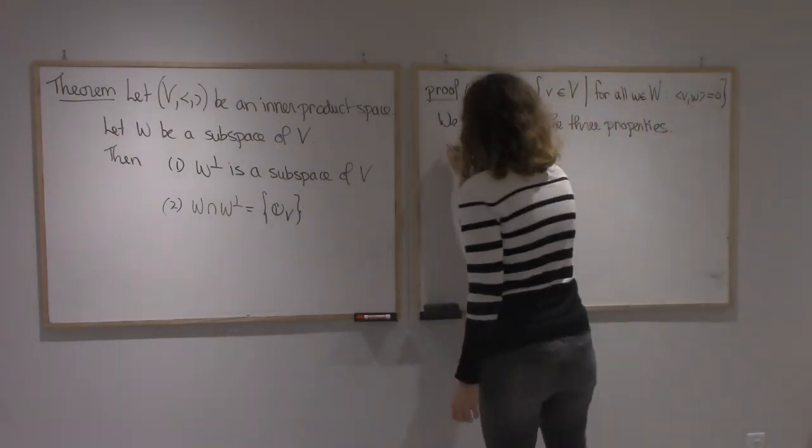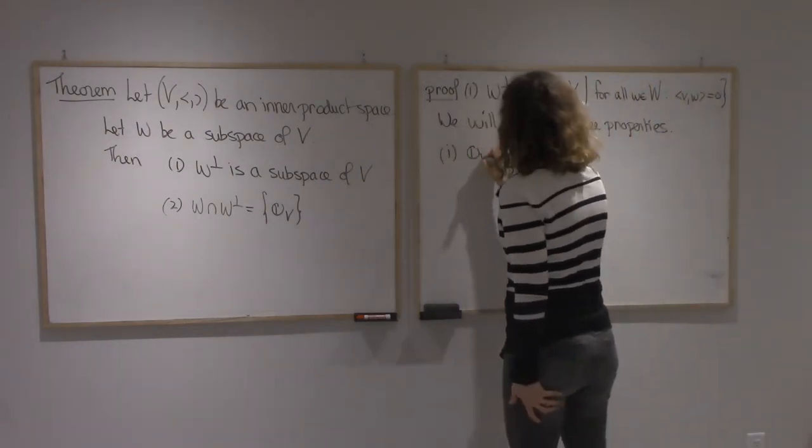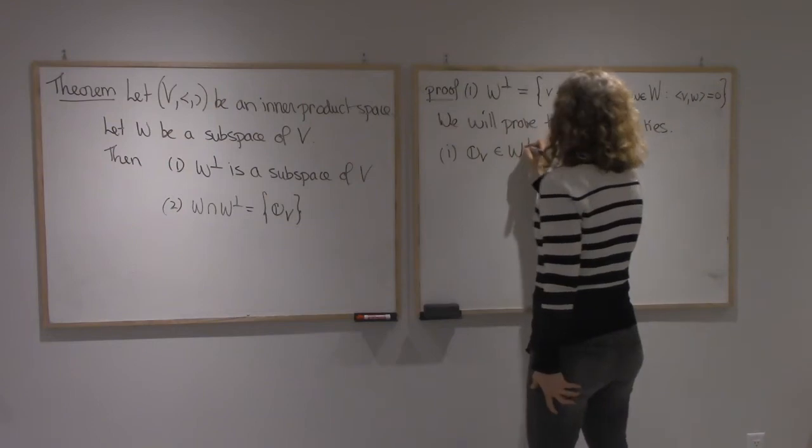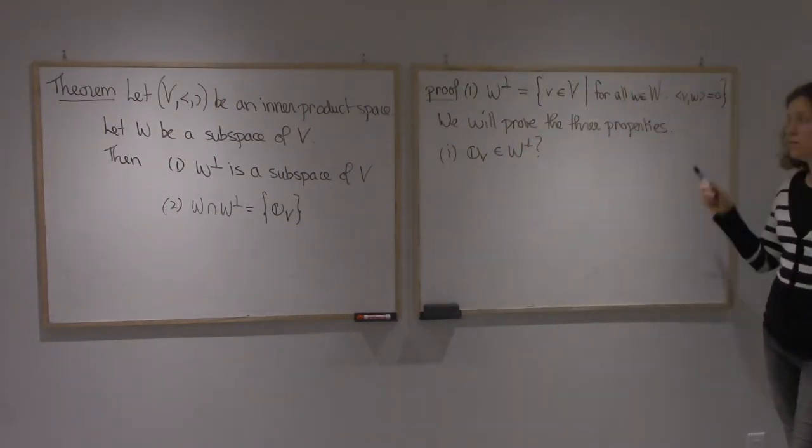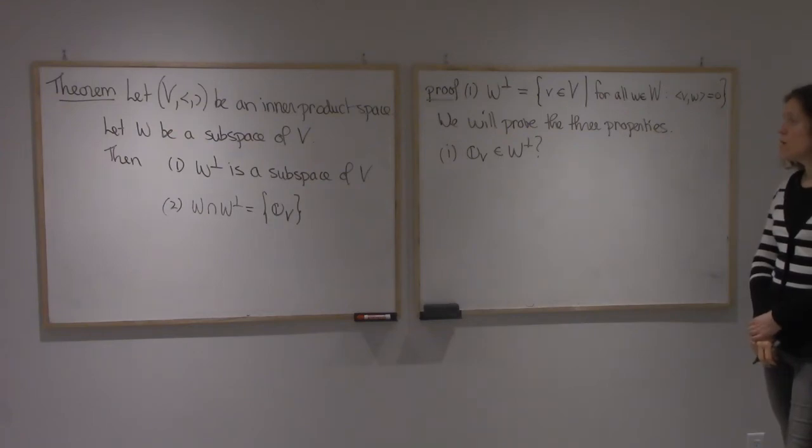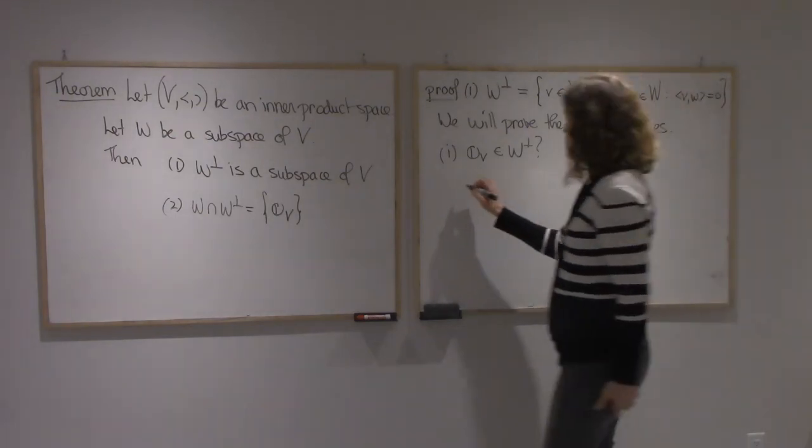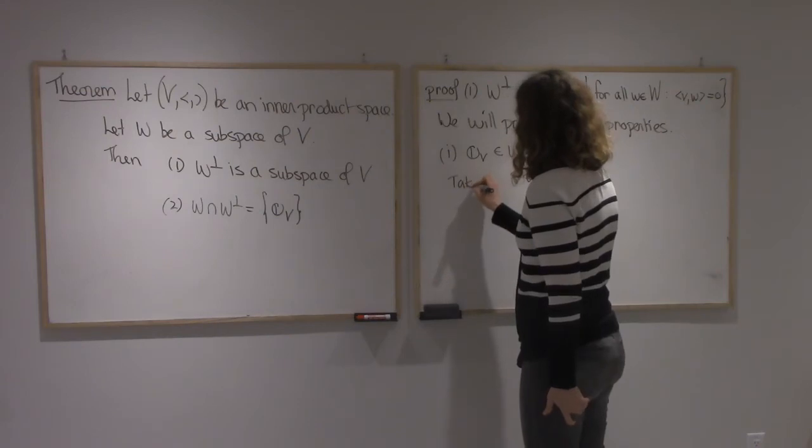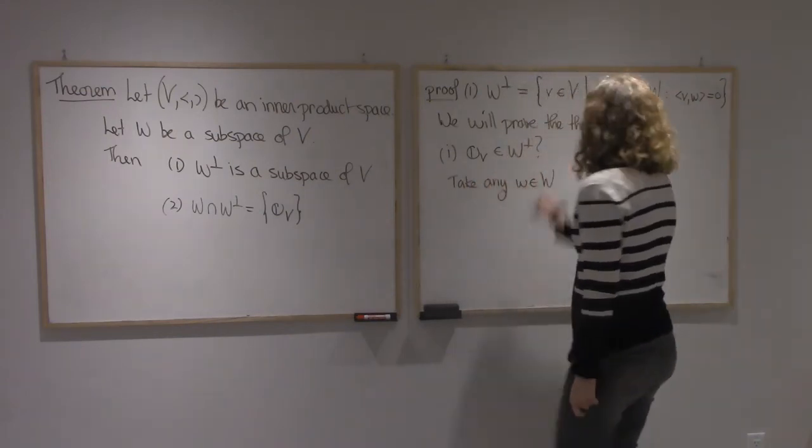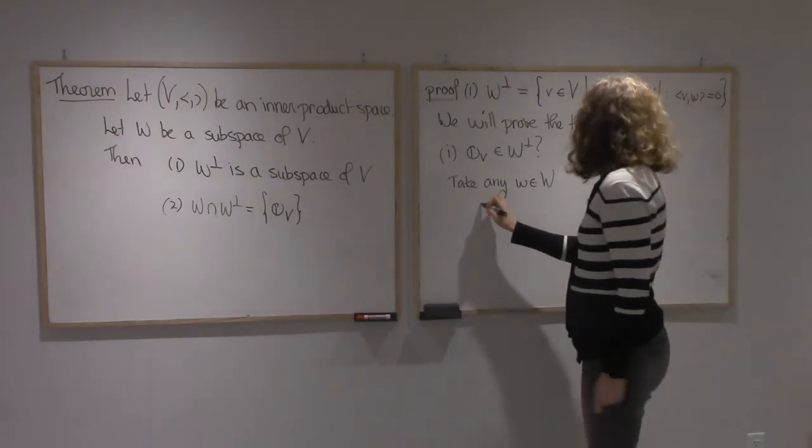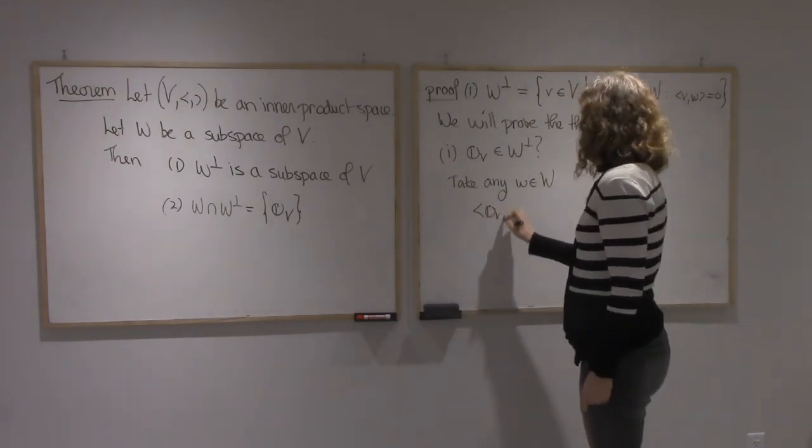So first, I need zero of V in W-perp. So I need to check this condition for the zero element of V. So I need to take any w in W. I'm going to look at zero_V dot w.